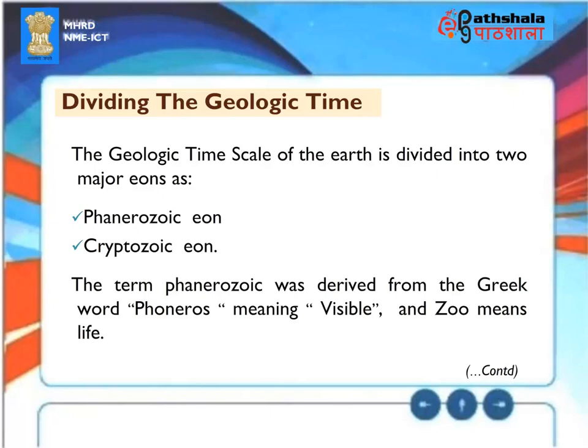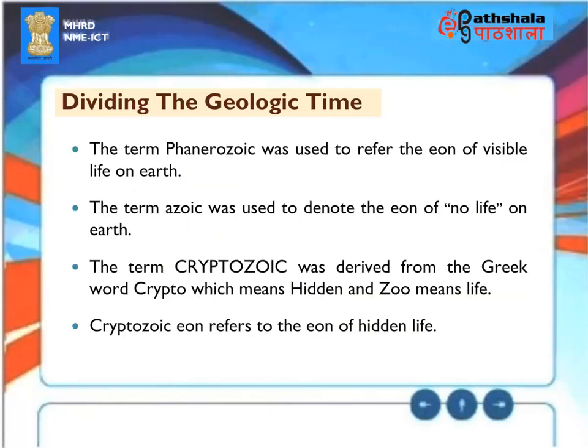The geologic time scale of the Earth is divided into two major eons: the Phanerozoic eon and the Cryptozoic eon. The term Phanerozoic was derived from the Greek word 'Phoneros' meaning visible and 'zoo' meaning life — used to refer to the eon of visible life on Earth. The term Azoic denoted the eon of no life. Cryptozoic was derived from the Greek word 'Crypto' meaning hidden and 'zoo' meaning life — referring to the eon of hidden life.